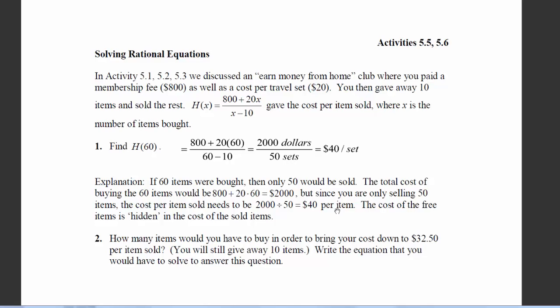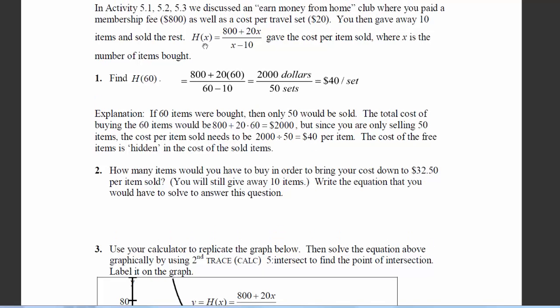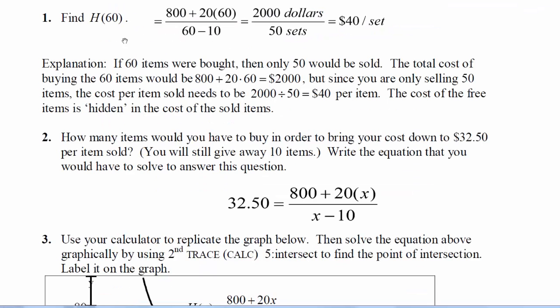We're then asked to take a look at question number two. How many items would you have to buy and sell to bring the cost down to $32.50? So now we're going to replace this h of x with $32.50. So here's my new equation. X is what we don't know. We don't know how many items we need to buy and sell to bring our cost down to $32.50.